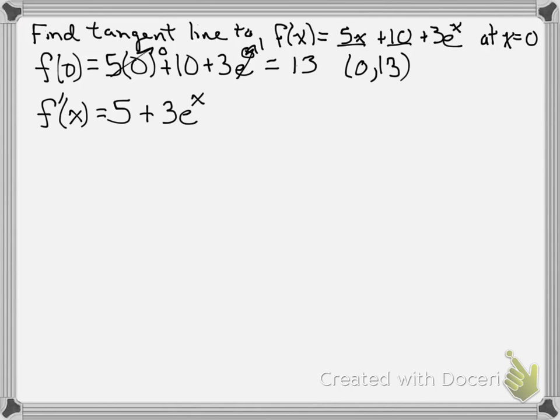Now we're specifically looking for the slope at 0, so m is going to be f'(0), which equals 5 plus 3 times e^0. Again, e^0 is 1, so that's 5 plus 3, or 8. There's our slope.